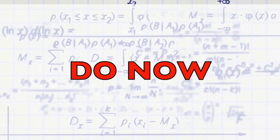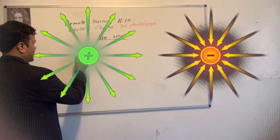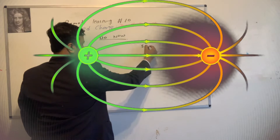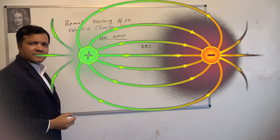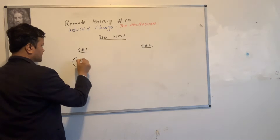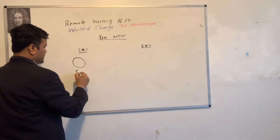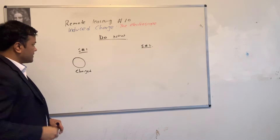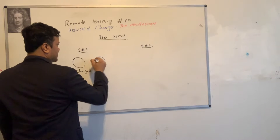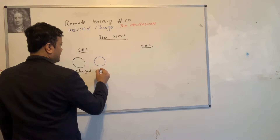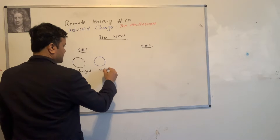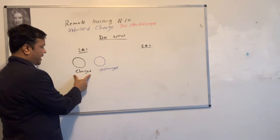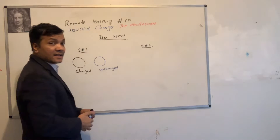Let's start today's remote learning with Do Now. In scenario one, I have two metal spears. This metal spear is charged, and I have another metal spear which is uncharged. The black one is charged, and the blue one is uncharged.